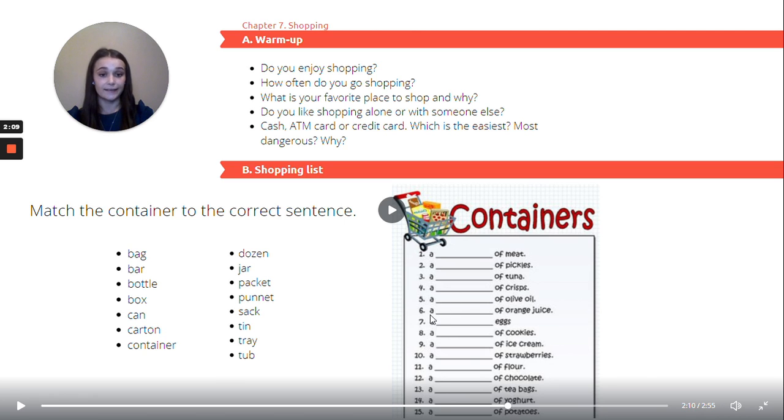Six. A of orange juice. That would be a carton of orange juice. Seven. A of eggs. And that's obviously going to be a dozen eggs. Eight. A of cookies. And that would be a tin of cookies.